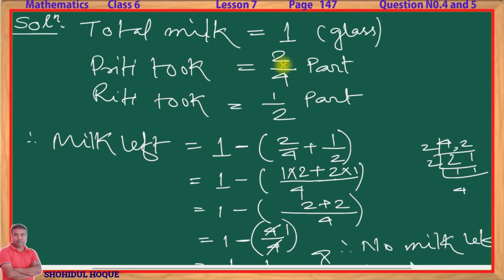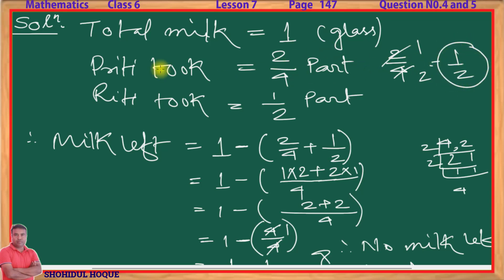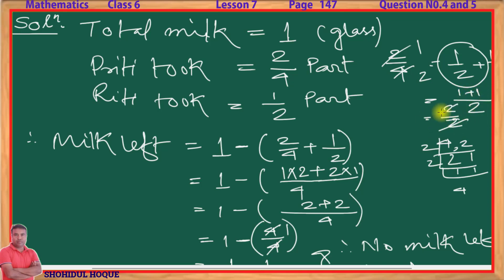Can you see that? From this we understand: 2 by 4 means what? 2 by 4 means 1 by 2, which is half. So both Preeti and Riti each took half. Half plus half: the numerators are the same, so 1 plus 1 equals 2 by 2. Cancel to get 1 — meaning both together drank the whole glass of milk.